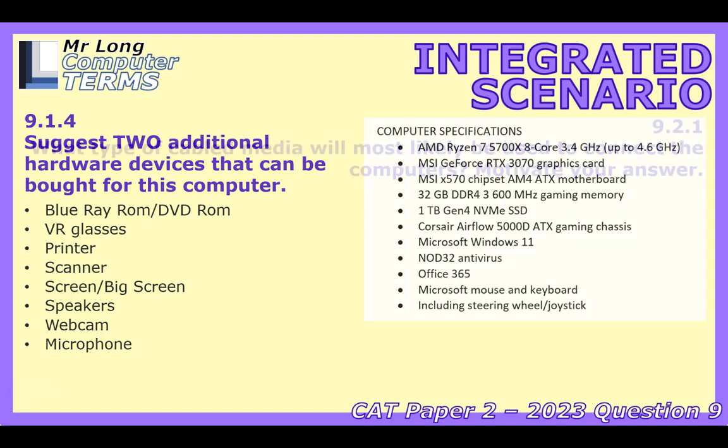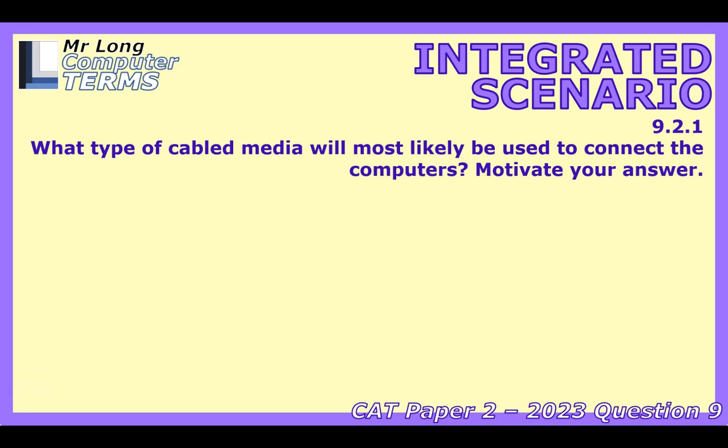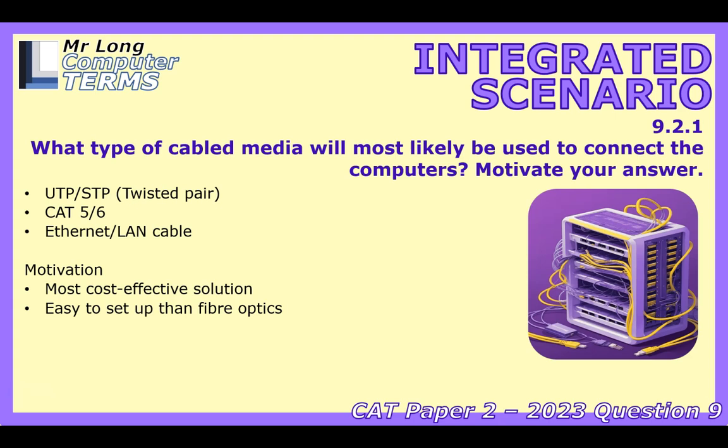Now networking — they need to connect 10 PCs. Question 9.2.1: what cabled media would they use and why? The answer is UTP or STP cables — twisted pair — specifically CAT5 or CAT6 Ethernet cables. UTP means unshielded twisted pair; STP is shielded. The twisting reduces interference. Main reasons for choosing twisted pair are cost and ease of setup — cheaper and simpler to install than fiber optics for a small network. CAT6 handles faster speeds and is more future-proof. Wired connections are also more stable than Wi-Fi for gaming, with less lag.